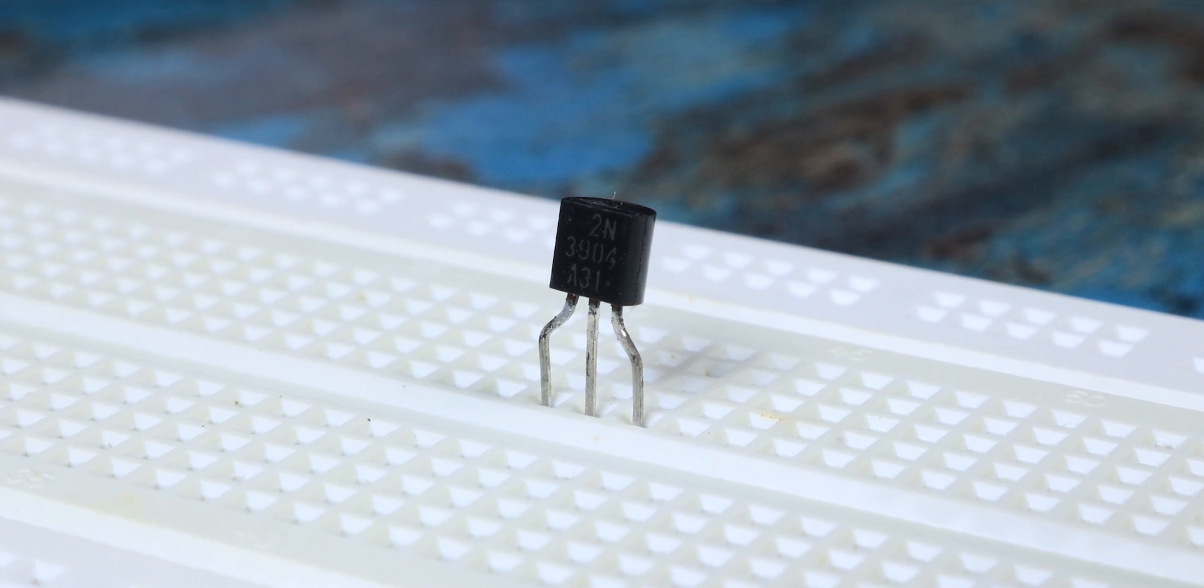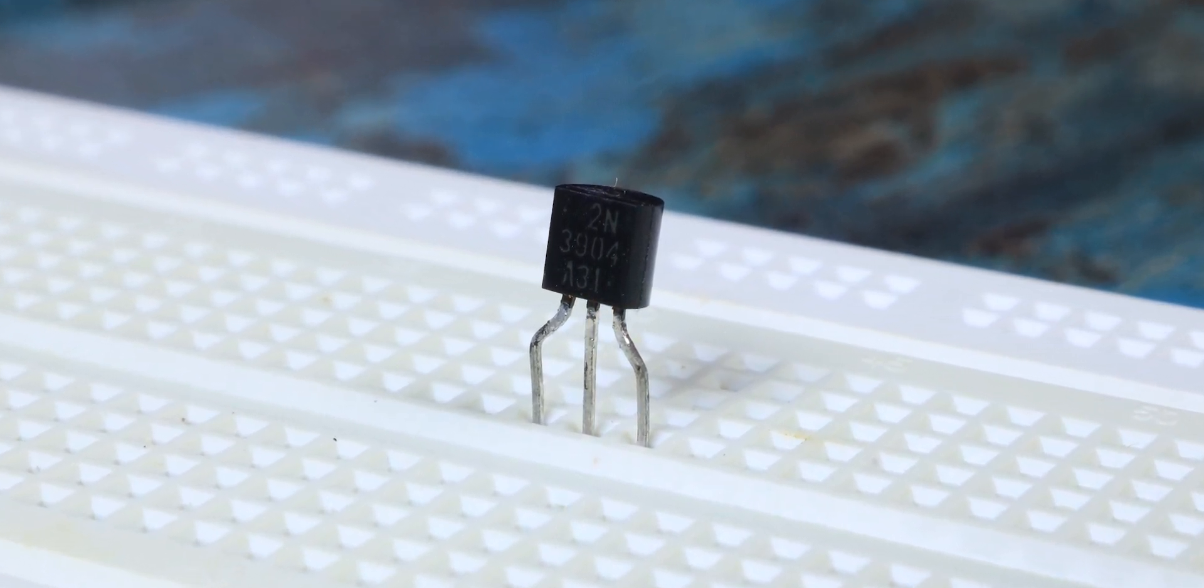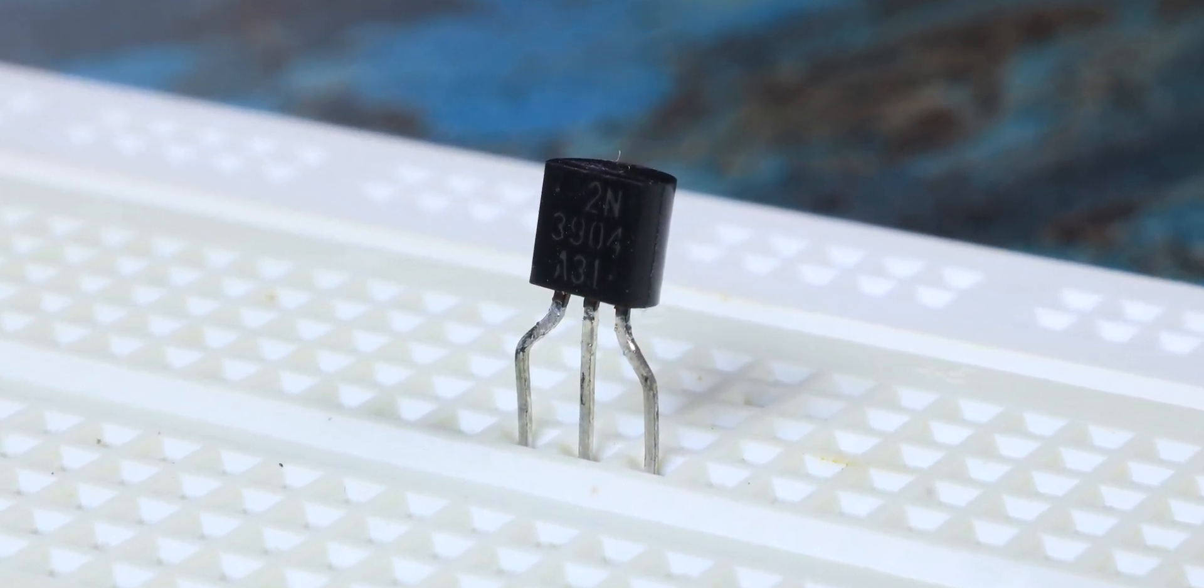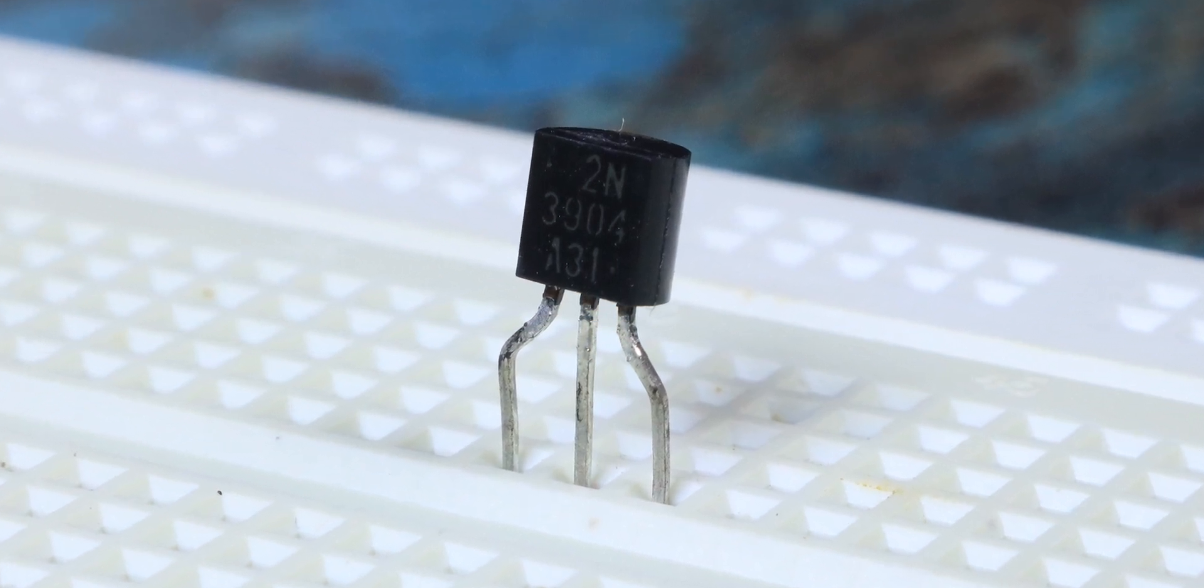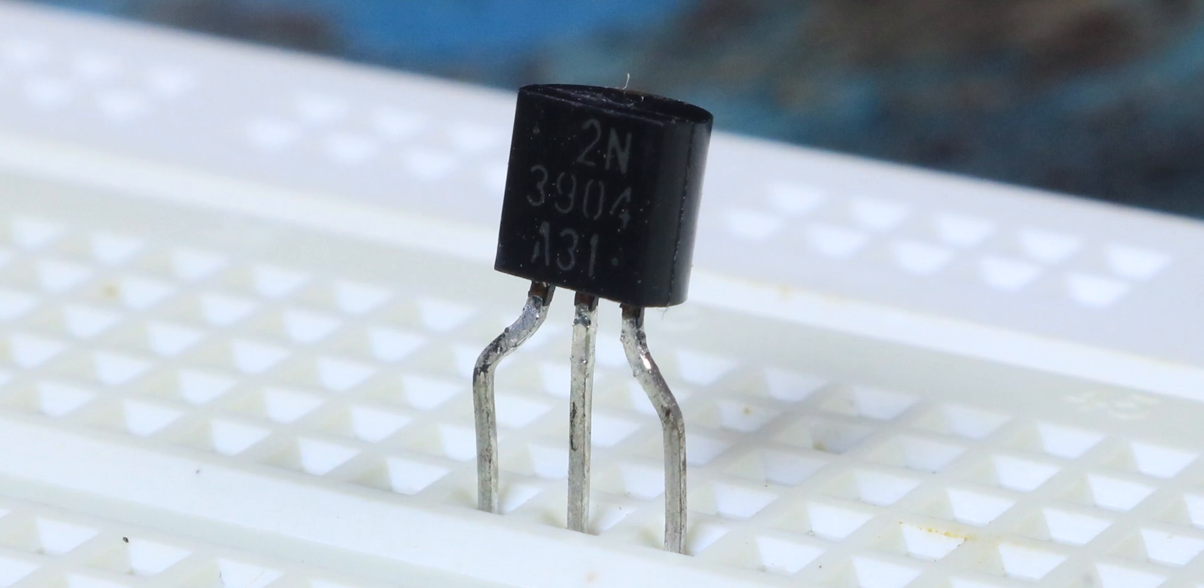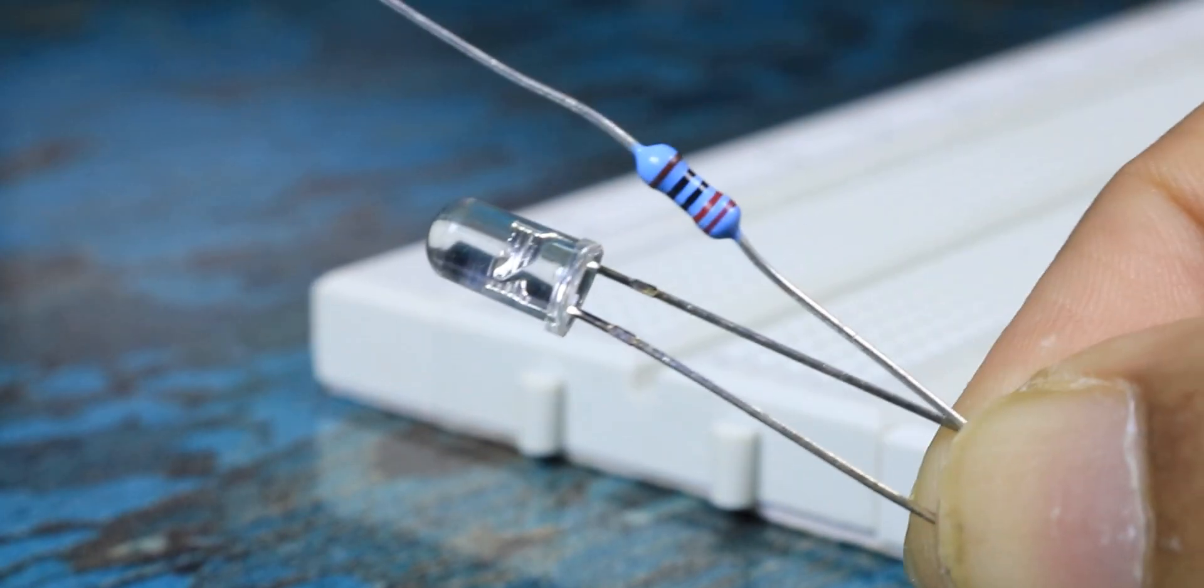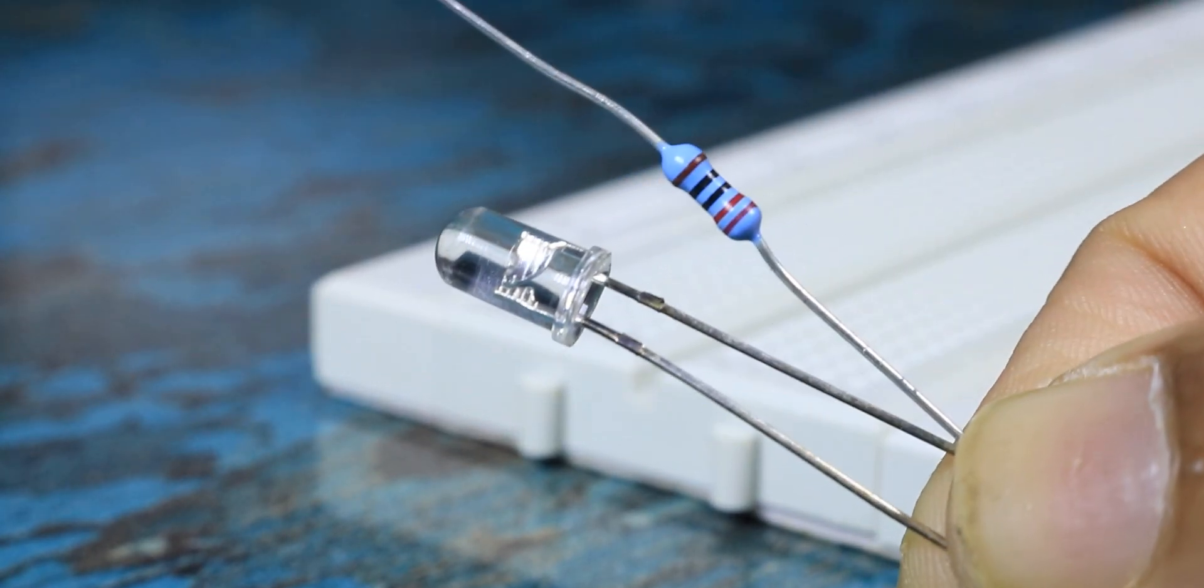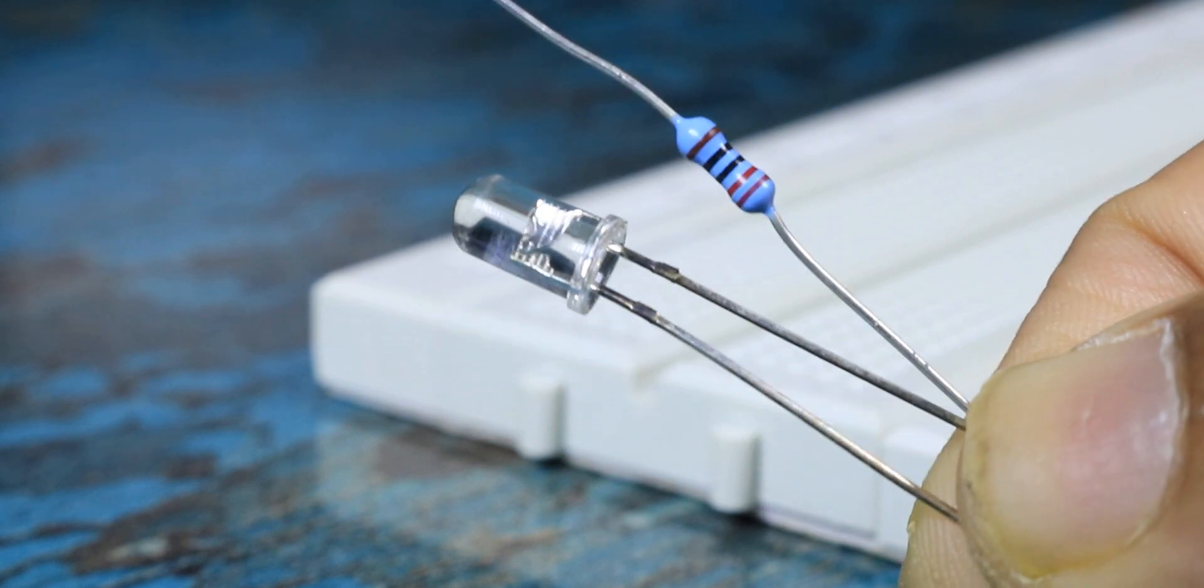To make this project possible, all we need is 3 NPN transistors. I used 3904 because I had them lying around. But you can pretty much use any NPN transistor like BC547. Along with that we will also need one LED and 220 ohm current limiting resistor for the LED.